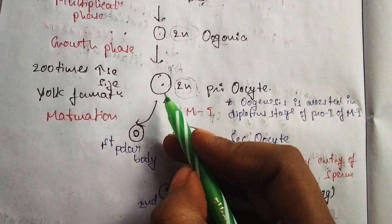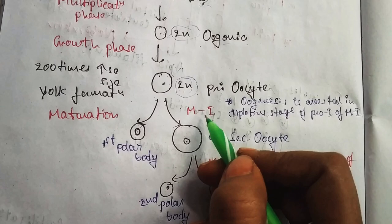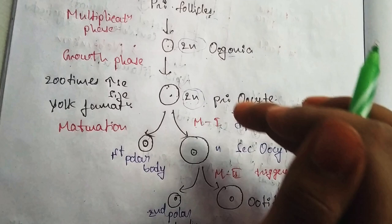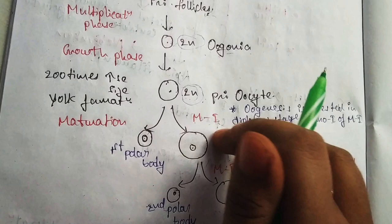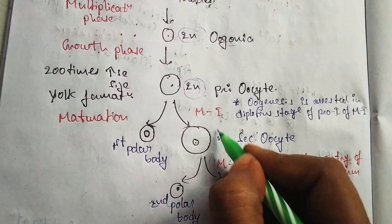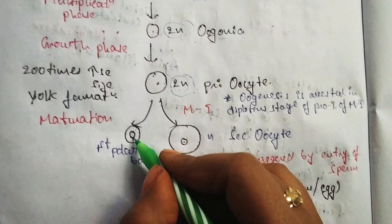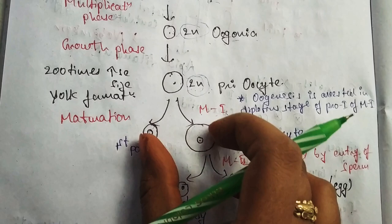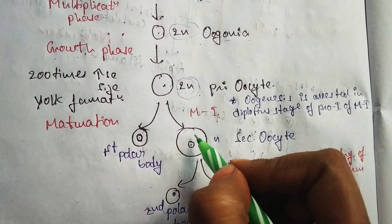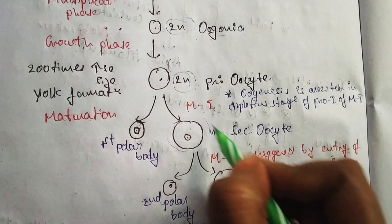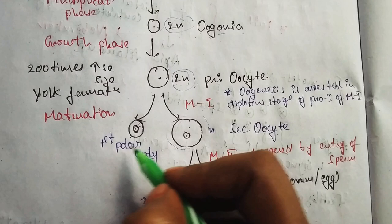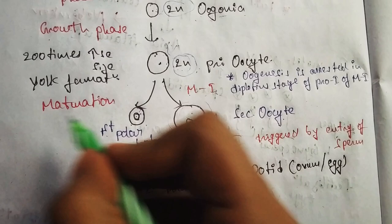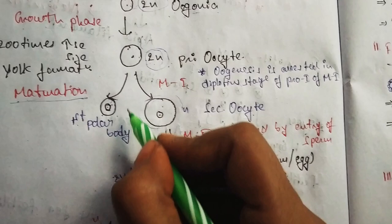The primary oocytes then undergo meiotic division 1. In meiotic division 1, one large cell and one small cell are formed. The large cell receives more cytoplasm and the small cell is the first polar body. The secondary oocyte and the first polar body are produced.